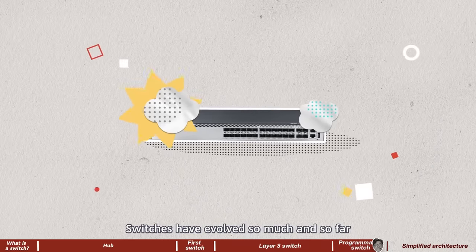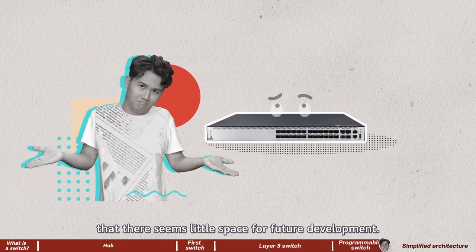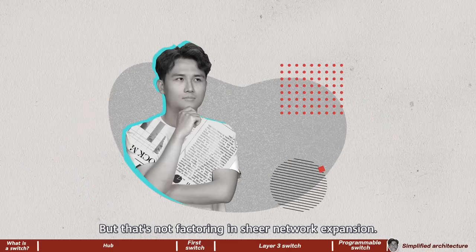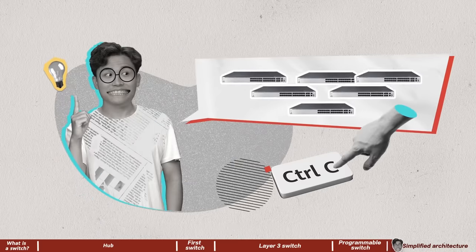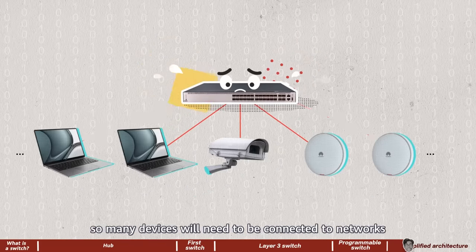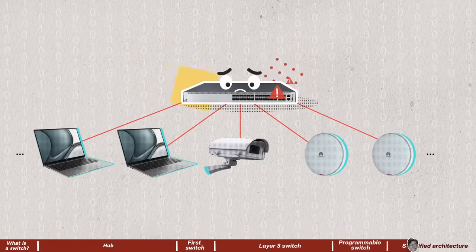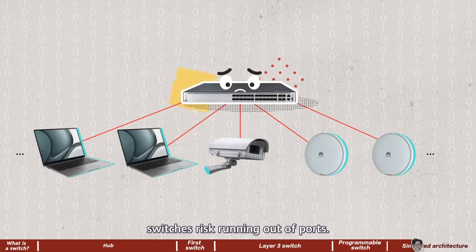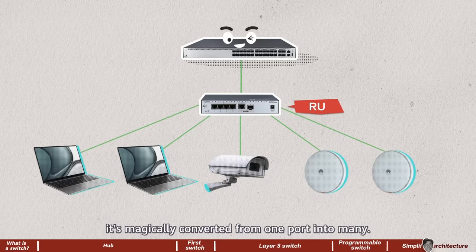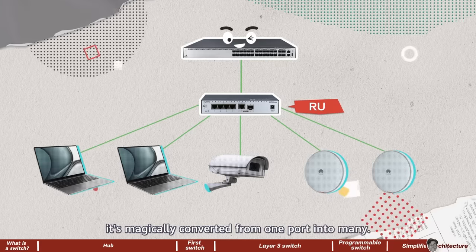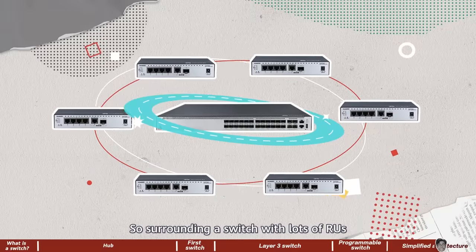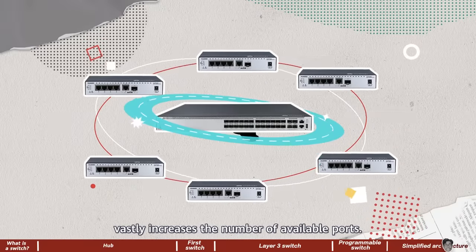Switches have evolved so much that there seems little space for future development — but that's not factoring in sheer network expansion. In the age of the Internet of Things, so many devices will need to be connected to networks that switches risk running out of ports. But if a switch port simply connects to a remote unit, it's magically converted from one port into many — so surrounding a switch with lots of remote units vastly increases the number of available ports.